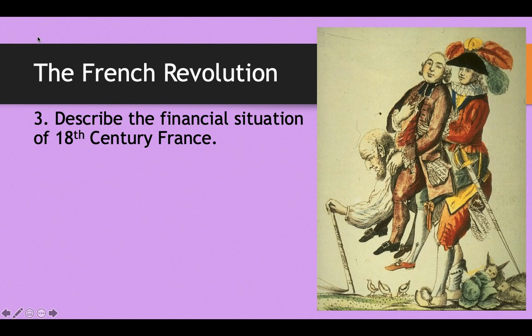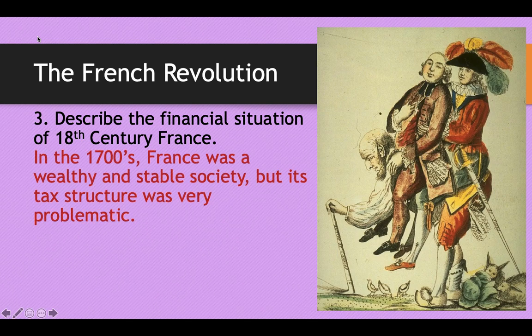In order to understand the French Revolution, you've got to talk about what France was like in the 18th century. In the 1700s, France was a very wealthy, stable society, just coming off the heels of King Louis XIV, the Sun King. But its tax structure was very problematic.